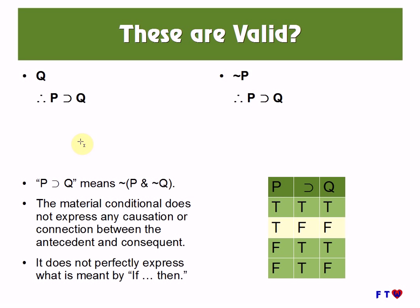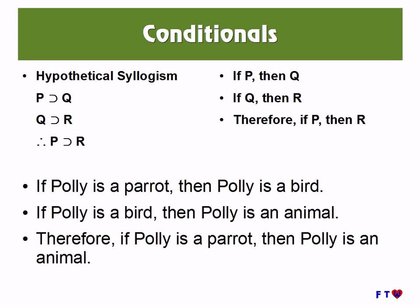I should note that there are generally valid argument forms such as 'Q, therefore if P then Q' and 'not P, therefore if P then Q,' which might seem strange. What I want to point out is that the material conditional does not express any causation or connection between the antecedent and consequent, and it does not perfectly express what is meant by 'if-then.' This is an advanced subject and I won't go into further detail here. But for most conditionals — expressing one proposition conditional on another — this formulation will work. There are some conditionals not well expressed this way, but that's an advanced topic.